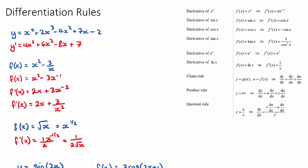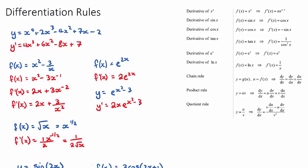For exponential functions, if f(x) equals e to the 2x, the rule is to take the derivative of the power — which is 2 — bring it to the front, and the rest stays the same: f dash x equals 2e to the 2x. As a second example, if y equals e to the (x squared minus 3), the derivative of the power is 2x, so y dash equals 2x times e to the (x squared minus 3).